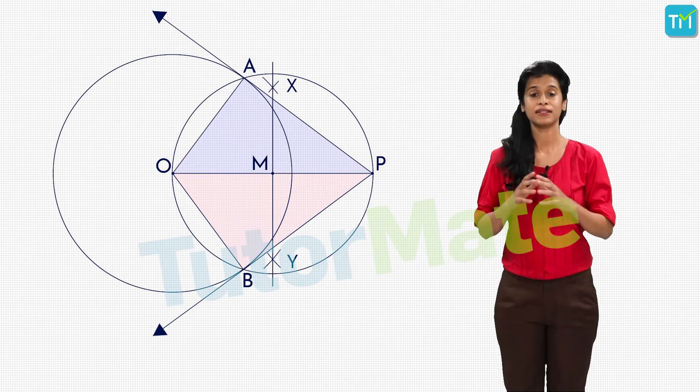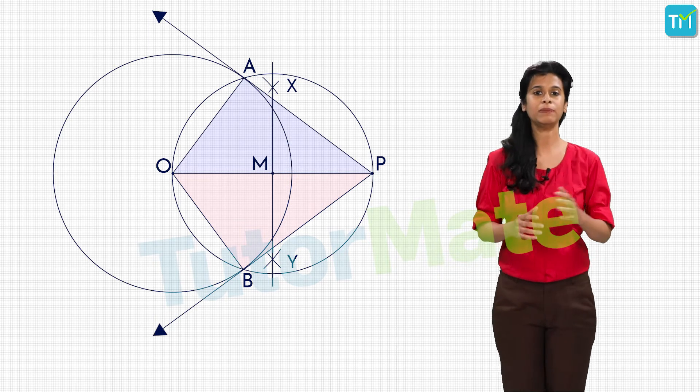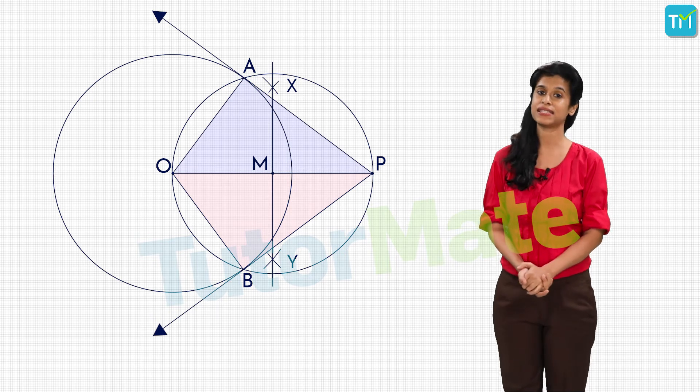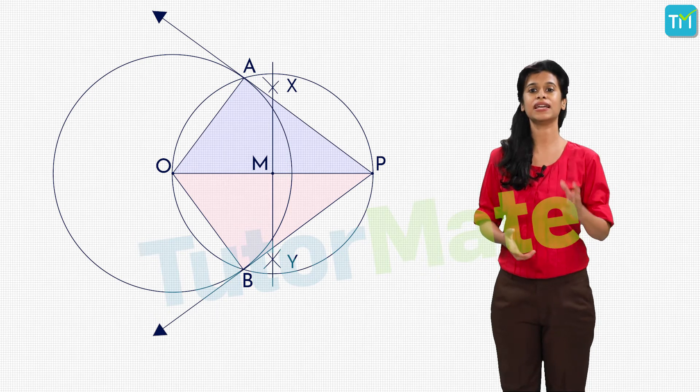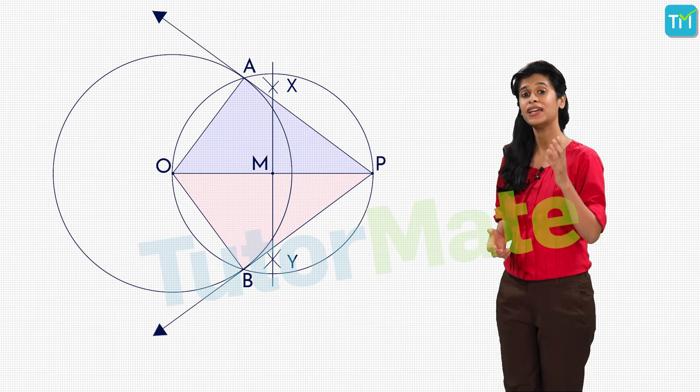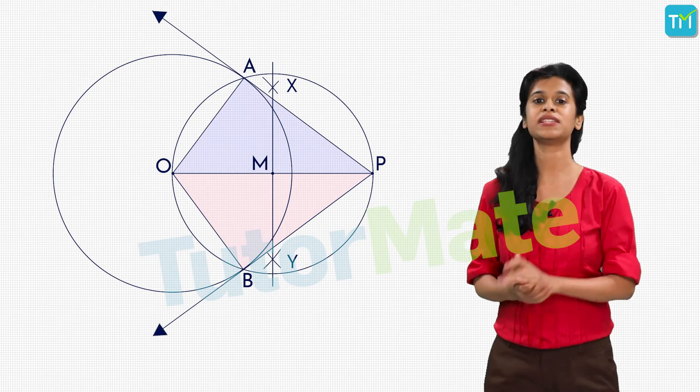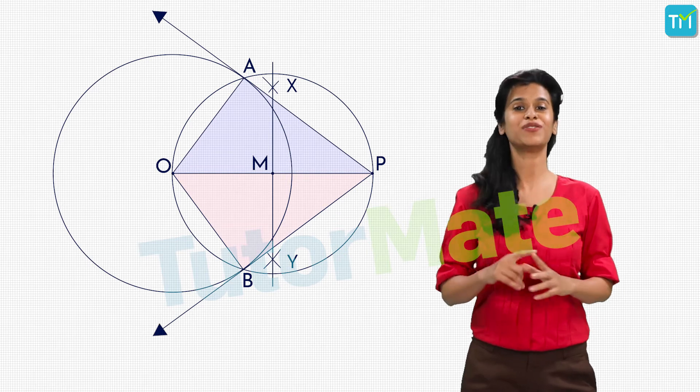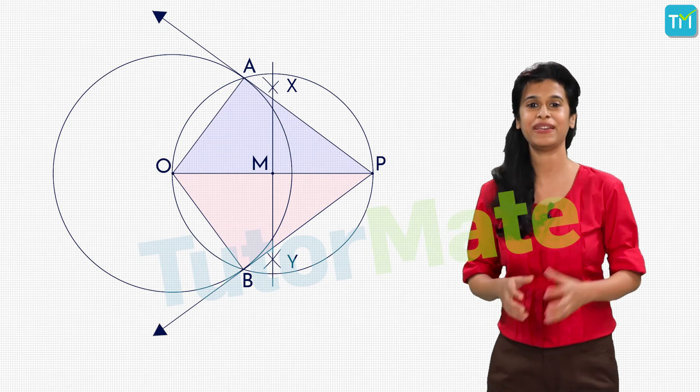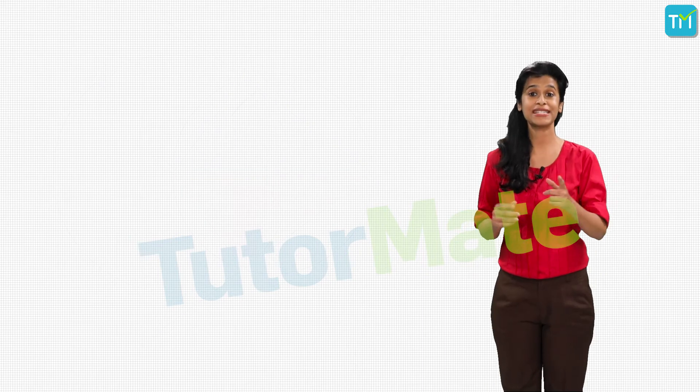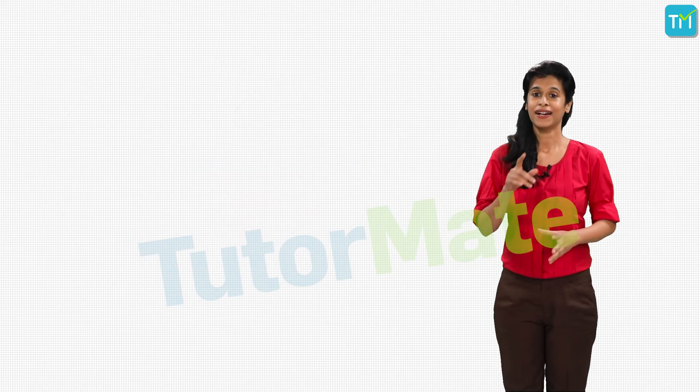That's because the angles OAP and OBP are both angles in a semicircle, where the circle is the one having its center at M. We know that angles in a semicircle are right angles. Therefore, OAP and OBP are both equal to 90 degrees. Wow, this is getting to be as much fun as it's challenging, right?